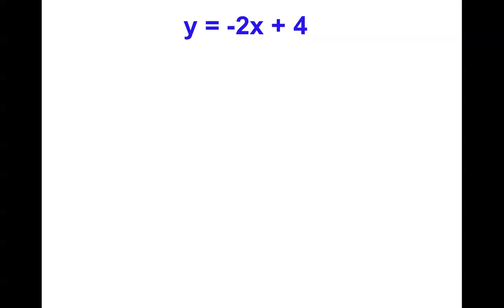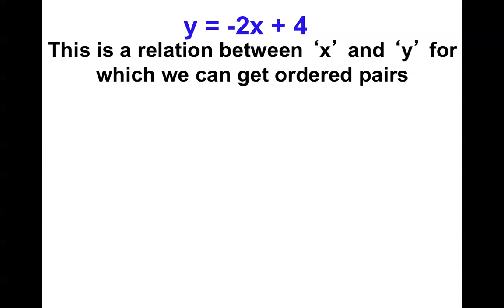What I really hope the students learn is that every equation that they see in this chapter will make them a straight line. So, for example, this equation will make a straight line. Which one? We don't know yet. The only thing that we know is that there is going to be a relationship between x and y, and we can use this relationship to get ordered pairs.